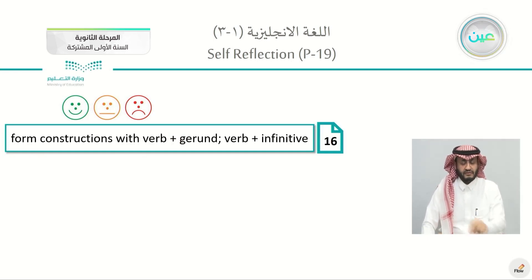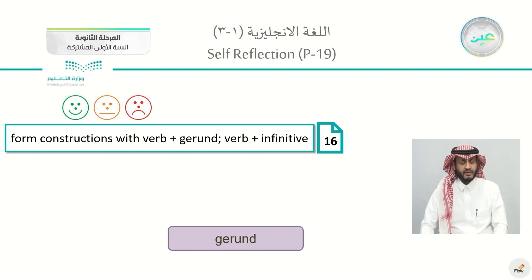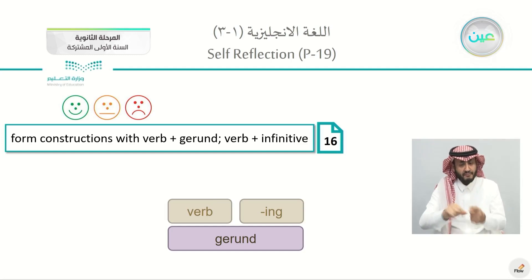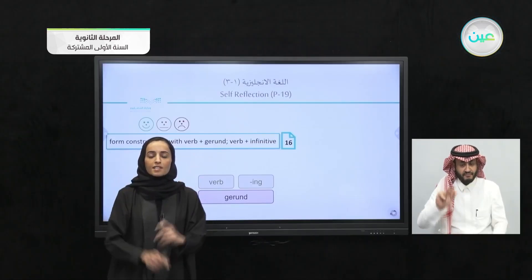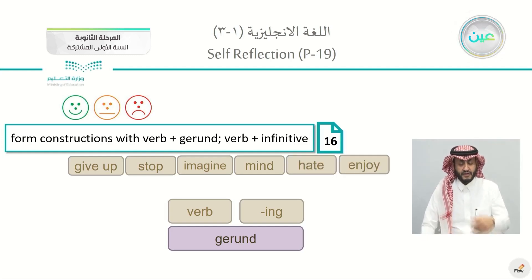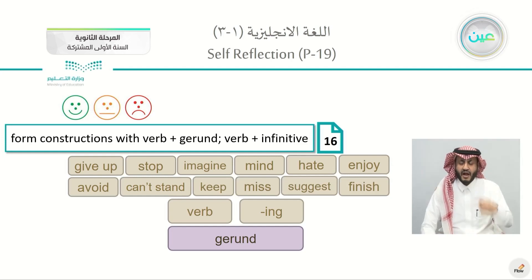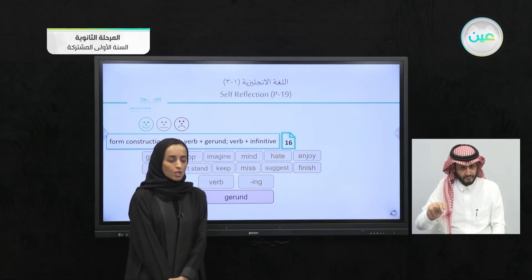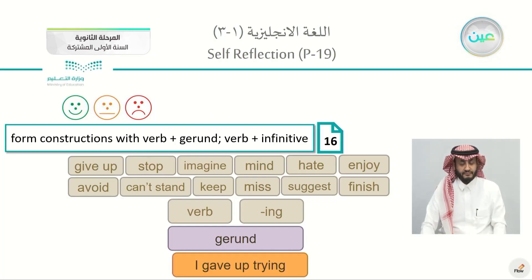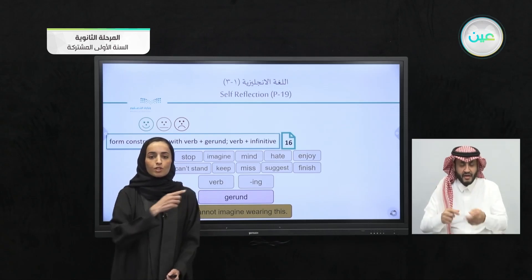Also on page 16, we spoke about gerunds and the full infinitive. A gerund is a verb plus -ing that functions as a noun. When you have verbs like give up, stop, imagine, mind, hate, avoid, enjoy, can't stand, keep, miss, suggest, or finish, they are followed by a gerund. For example: 'I gave up trying,' 'he stopped talking,' and 'I can't imagine wearing this.' What comes after this list of verbs will be the gerund.